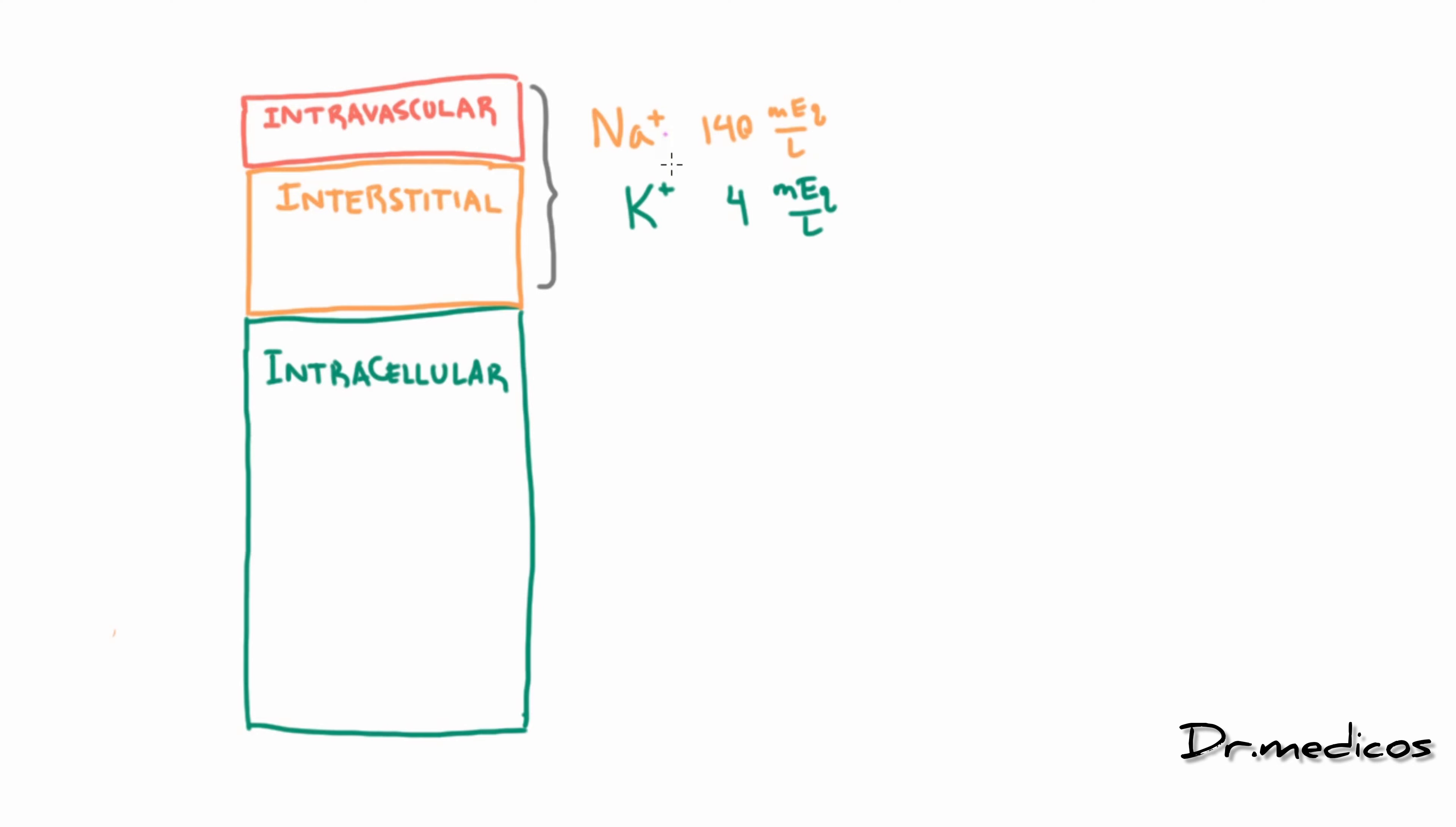But for every positive charge you need a negative charge, so we're going to have an even number of negative electrolytes in this area. The one there's most of is chloride, which is about 106 milliequivalents per liter. That has one negative charge.